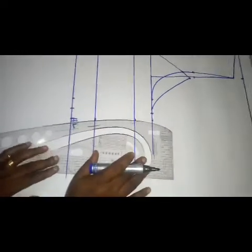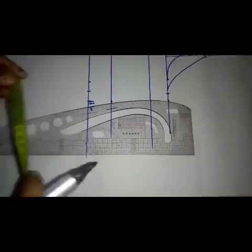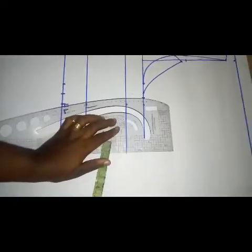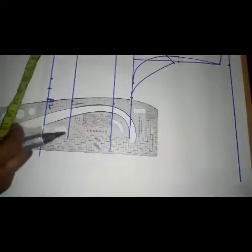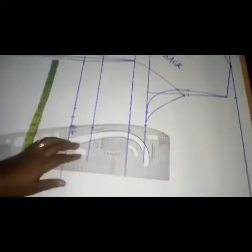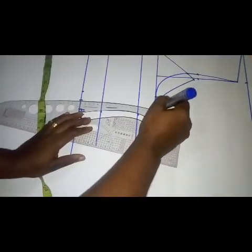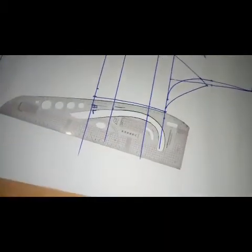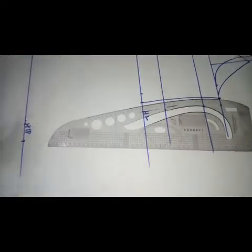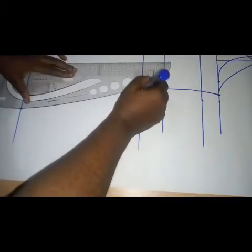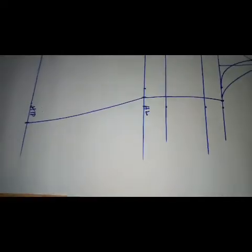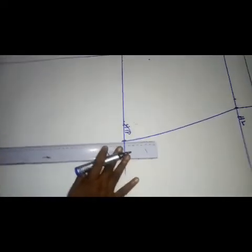I'm connecting all these lines now. There are many points — please don't be confused. I'm connecting from my 0.5 down to these points. Connecting to my hip. Remember, it's a shift gown — a shift bustier gown — and we need ease. We are done with our back bodice right now.